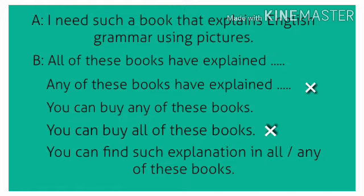True sentence: you can buy any of these books. You can buy all of these books. However, this second sentence is not according to context — the sentence seems unnatural.